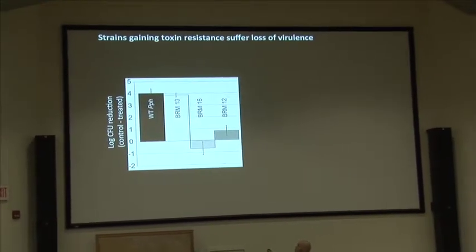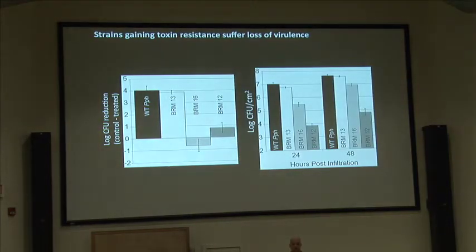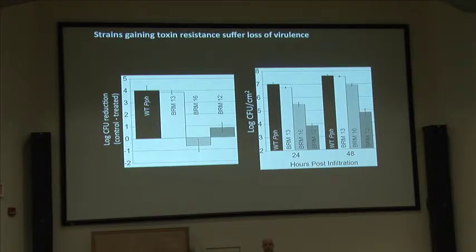Showing a similar graph: wild type PPH—these three strains were all treated with the toxin. One strain didn't gain durable resistance, but the other two did. When I take these and infiltrate them into their host plants, what we can see is that for the two strains BRM16 and BRM12, there's a noticeable reduction in their ability to proliferate within their host plants—so there's a fitness tradeoff in their virulence towards their host plant. But for those strains that don't gain durable resistance, they grow to just about the same as wild type levels within their host plant. I've seen the same thing for PGY: those isolates that don't have durable resistance don't have any tradeoff, whereas those that do have durable resistance do have a tradeoff.